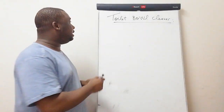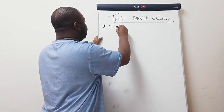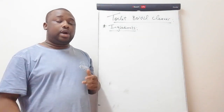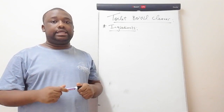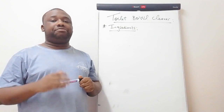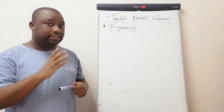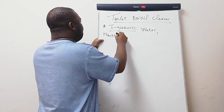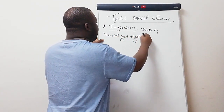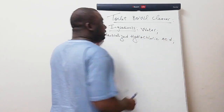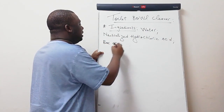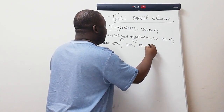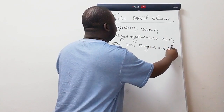Let's start by stating the ingredients for the toilet bowl cleaner. You need: water, neutralized hydrochloric acid, Bac 50 — which is an antibacterial agent — pine fragrance, and dye.